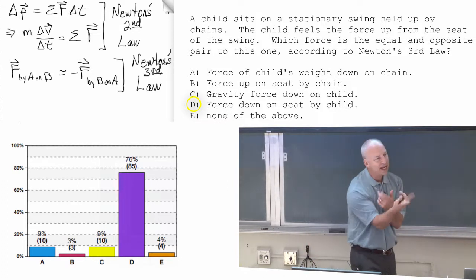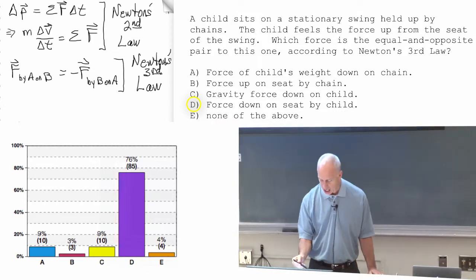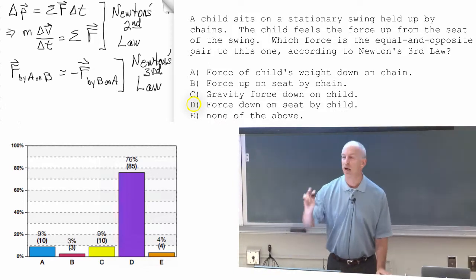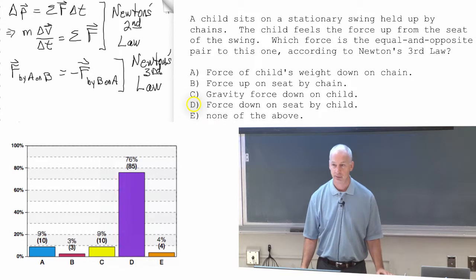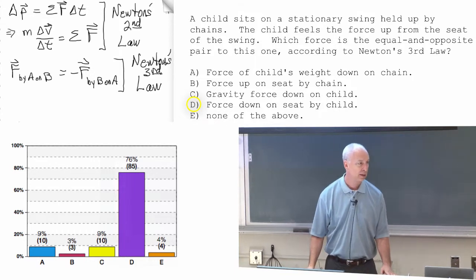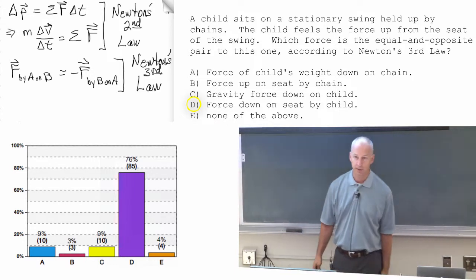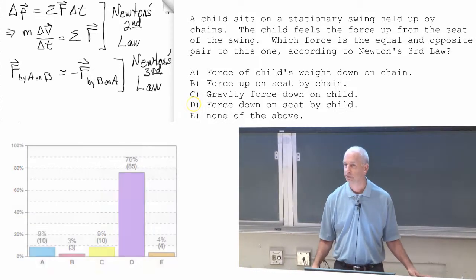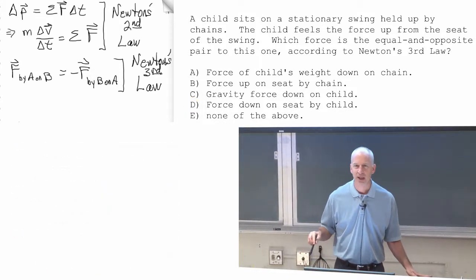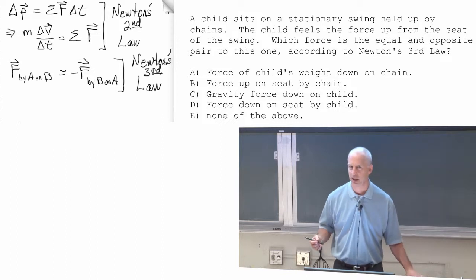So just take A and, if you've written correctly by A on B, then all you do is reverse the two. By B on A, to find the Newton's third law pair, and change the sign. Any questions about that one? It seems like you have it straightened out now.